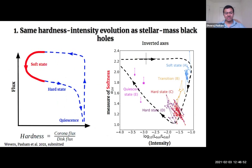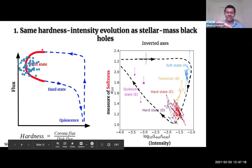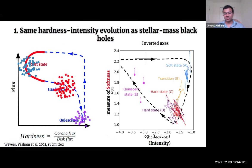This is very similar to the hardness intensity diagram of stellar mass black holes, except it's inverted, which is how it's done in the AGN community. We found the source in the soft state because we missed the rising part of the TDE. We then saw the hard state and eventually the quiescent state — sampling three states and the individual transitions between them.